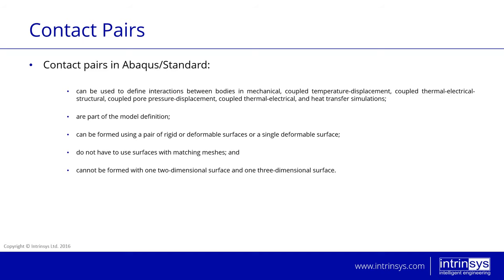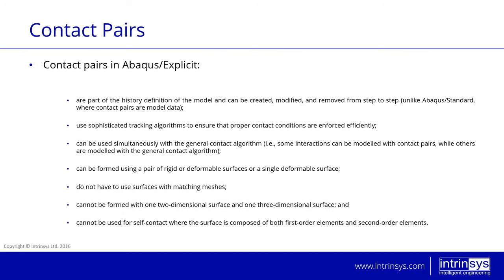Contact pairs in Abacus Standard can be used to define interactions between bodies in mechanical, coupled temperature-displacement, coupled thermal-electrical structural, coupled pore pressure-displacement, and heat transfer simulations. They are part of the model definition. They can be formed using a pair of rigid or deformable surfaces or a single deformable surface. They do not have to use surfaces with matching meshes, and cannot be formed with one two-dimensional surface and one three-dimensional surface. So you can create contacts between a surface and a solid as long as they are both part of the same 3D environment.